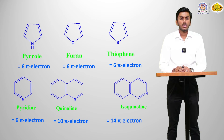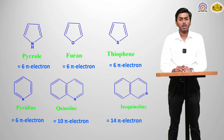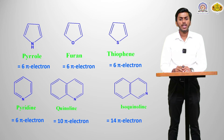Other aromatic compounds include pyrrole, furan, and thiophene. These are cyclic, planar in nature, and have 6 pi electrons. The lone pair on nitrogen in pyrrole, the lone pair on oxygen in furan, and the lone pair on sulfur in thiophene are also involved in conjugation, giving a total of 6 pi electrons.